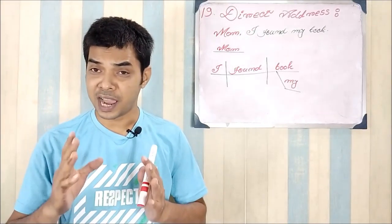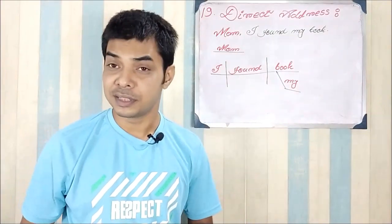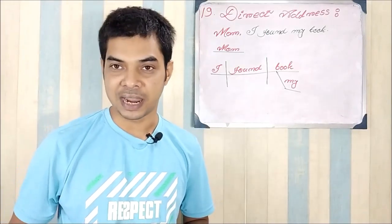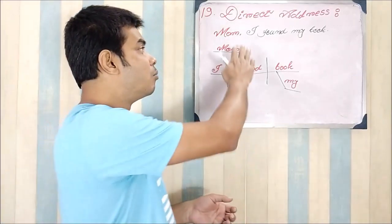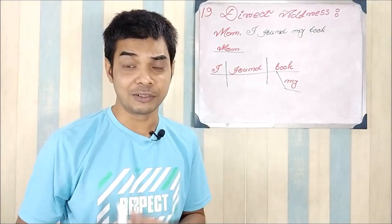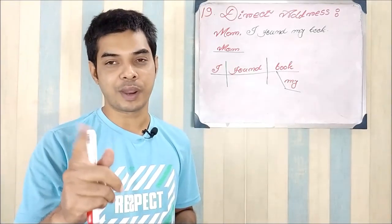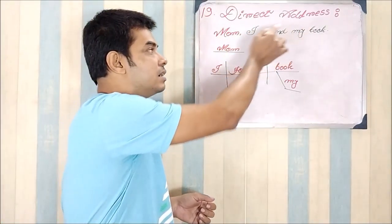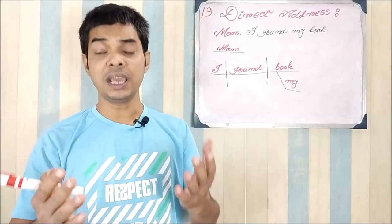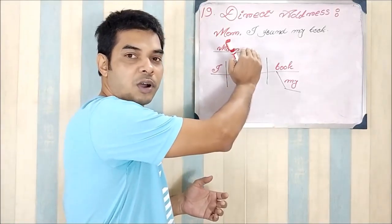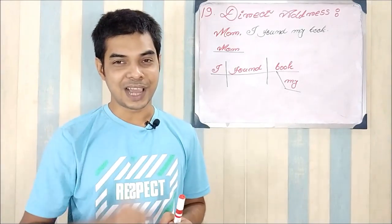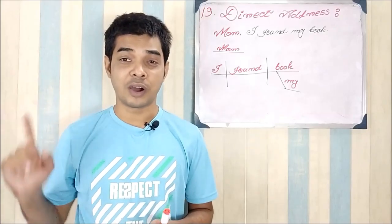Rule 19 covers direct address, also known as vocative. When we say 'Mom, I found my book,' 'mom' is the vocative or direct address. It is not part of the sentence structure — it has no grammatical relation to the sentence; it only draws attention. Therefore, place the vocative on a separate line at the top of the main sentence diagram, then diagram the rest of the sentence as normal.